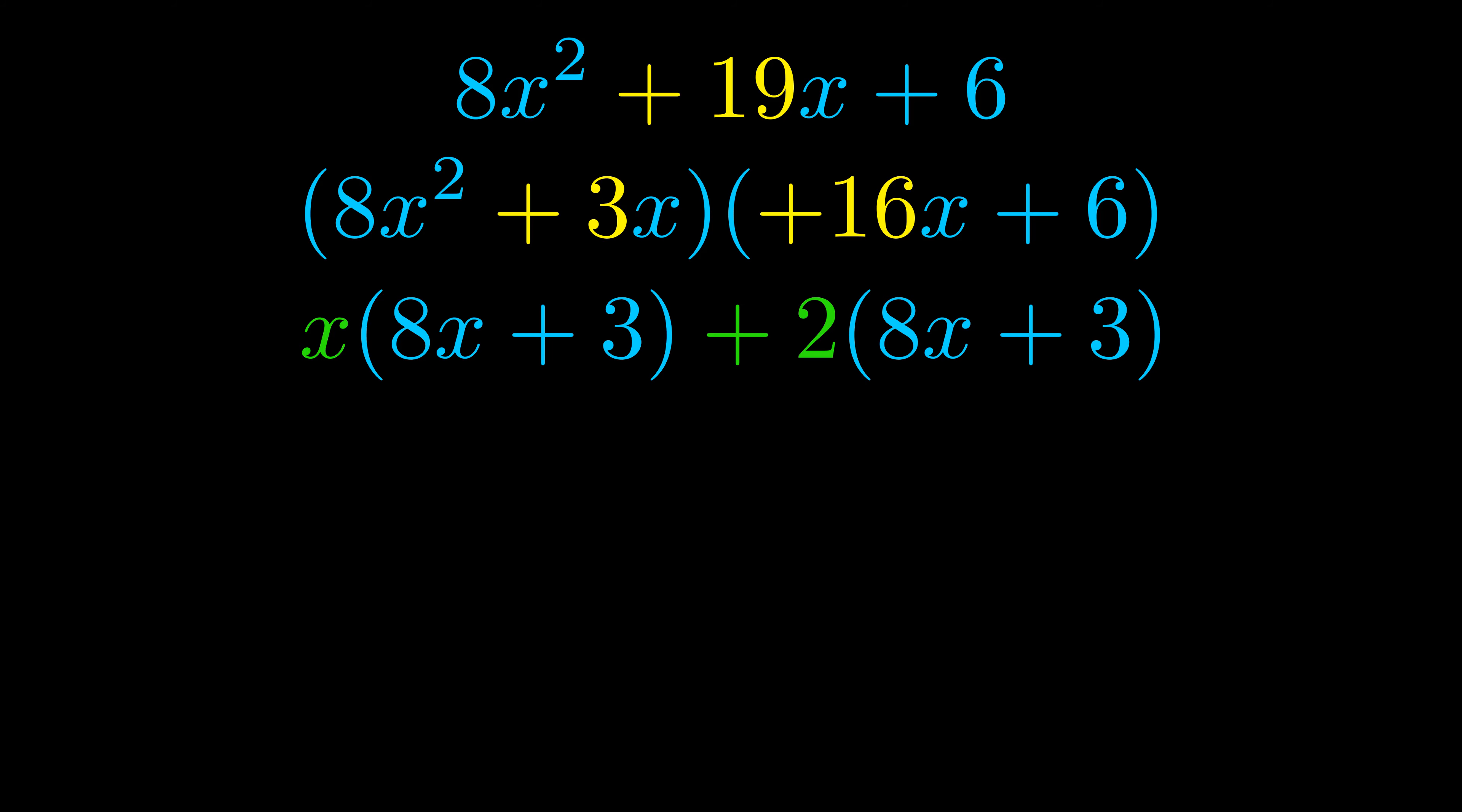Notice also how what remains inside of the parentheses is the same in both cases. The blue values are the same. Those blue values will become one of our factors and we will combine the two green values, the GCFs that we pulled out, to get the other one.